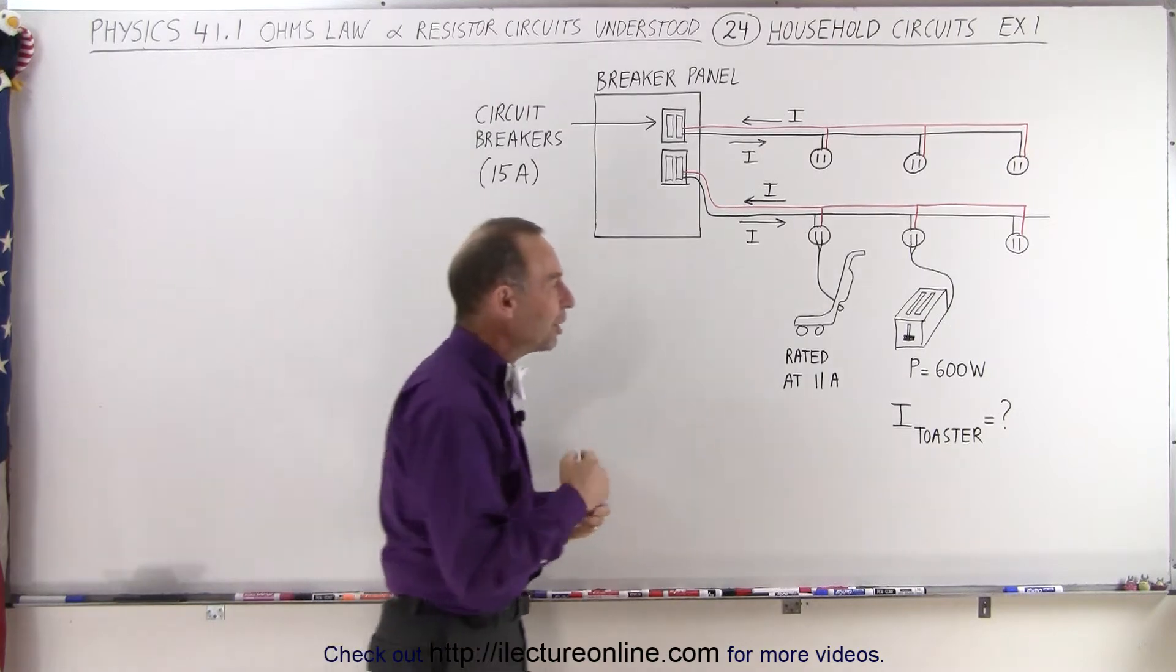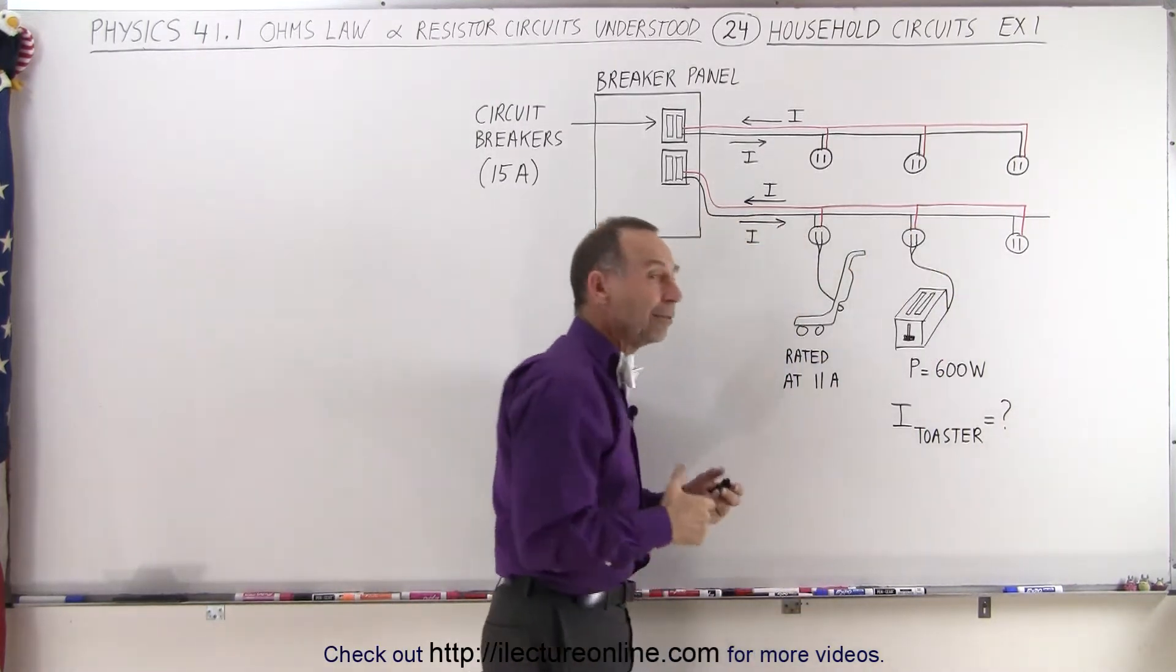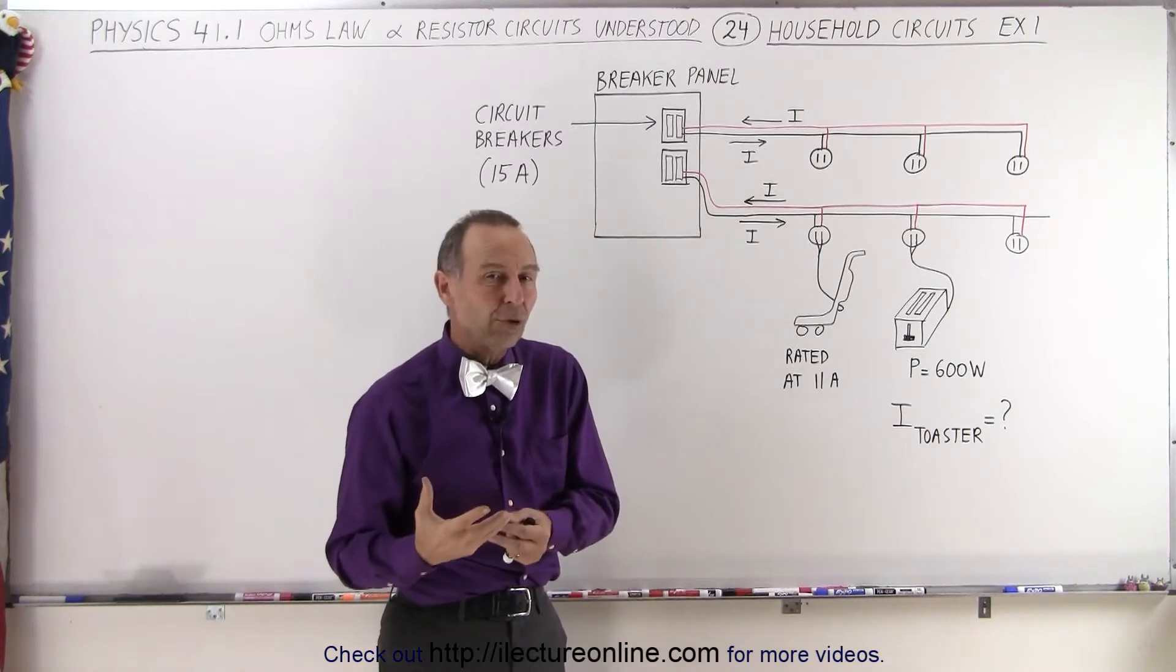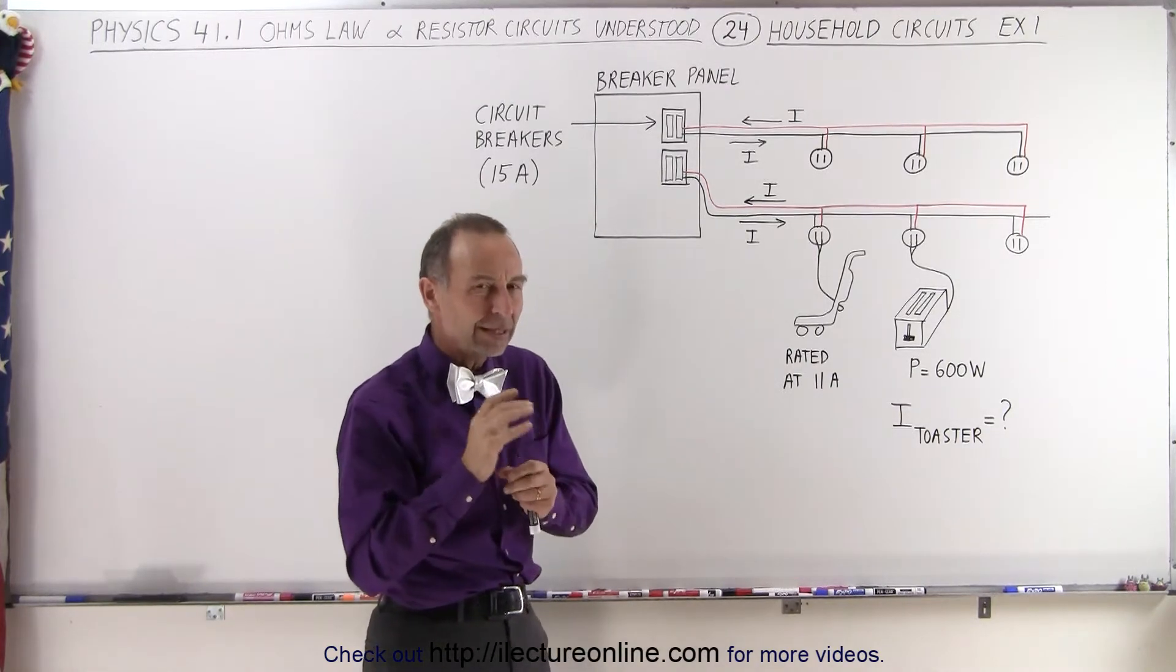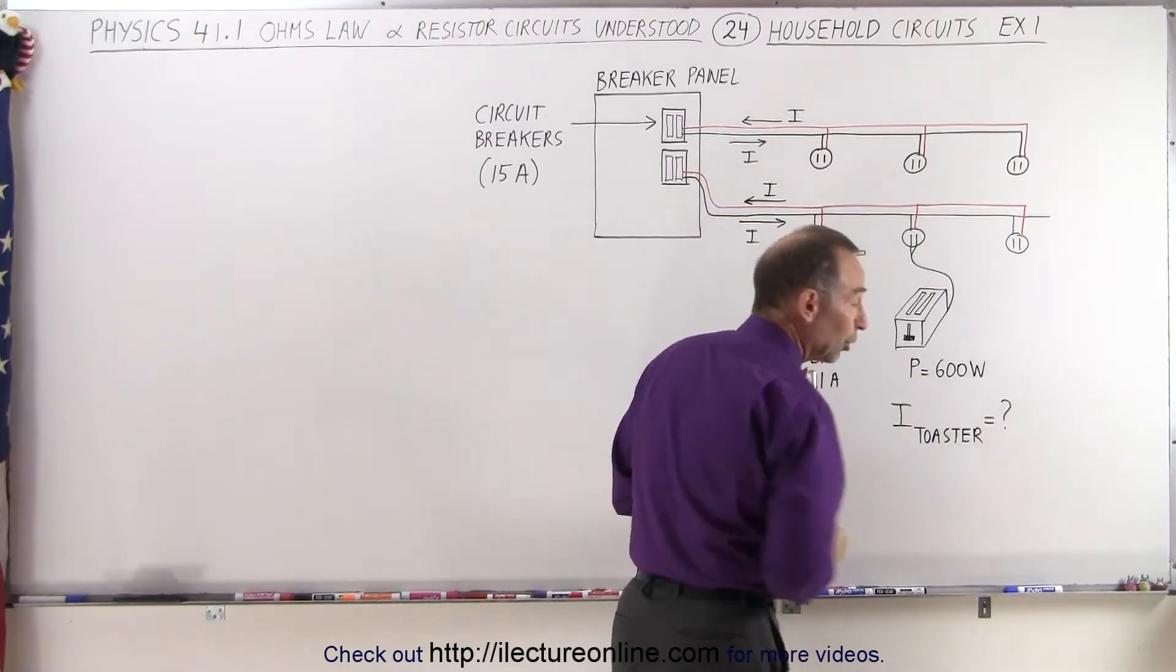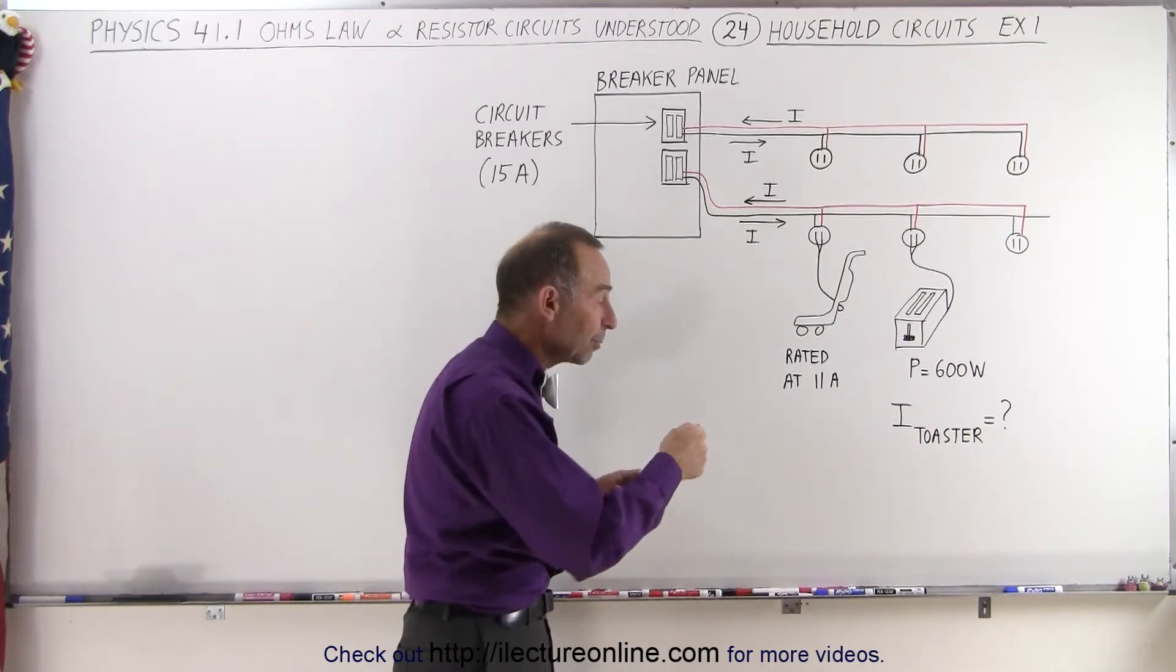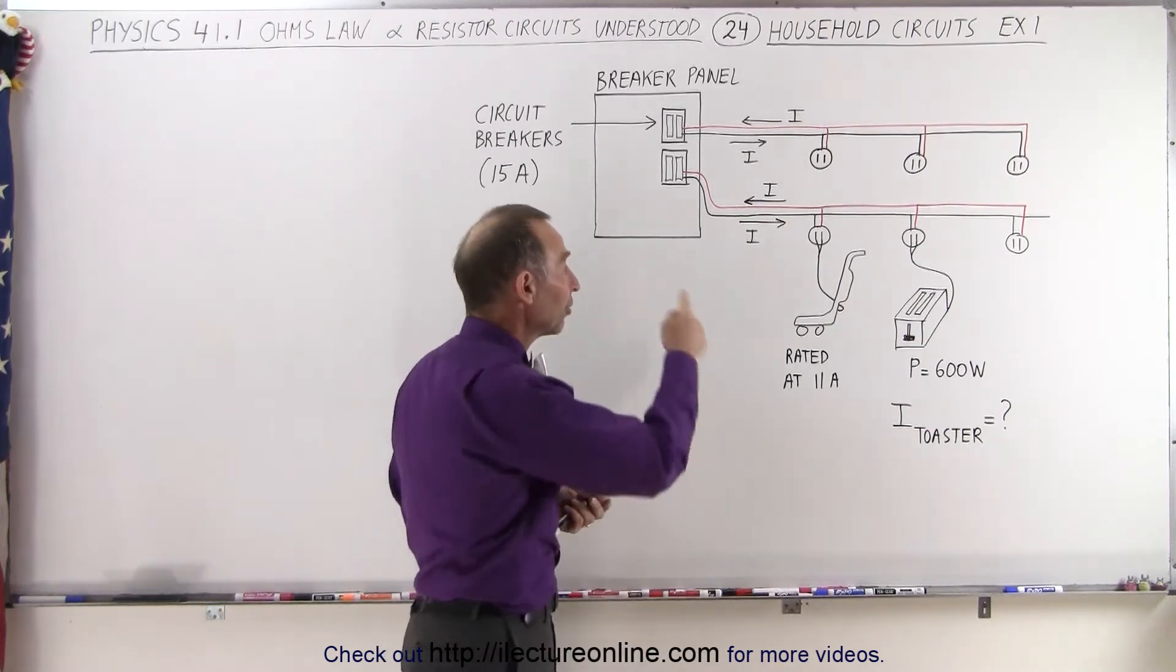But what if you now also hook up a toaster to the very same circuit? Toasters are typically rated in terms of watts, how much power they need, so it's a little bit different from amps. The question may be, how much current will the toaster draw and can you operate the toaster and the vacuum cleaner at the same time on the same circuit?